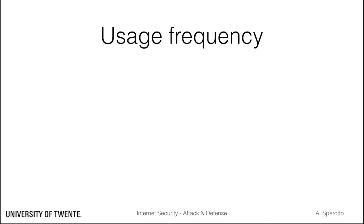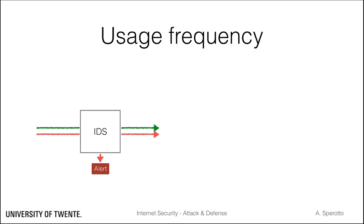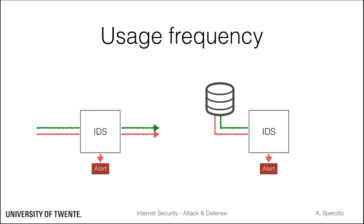An IDS can perform online, always-on monitoring, or run periodic batch offline analysis on historical data. Always-on detection, possibly close to real-time, is often considered one of the most important aspects of an IDS, because timely detection can positively impact the security level of a network. There might be situations in which fast detection is not a requirement and an offline analysis is adequate, for example for testing purposes.